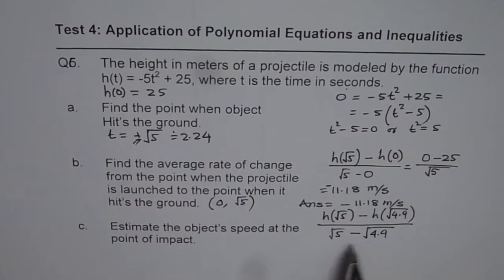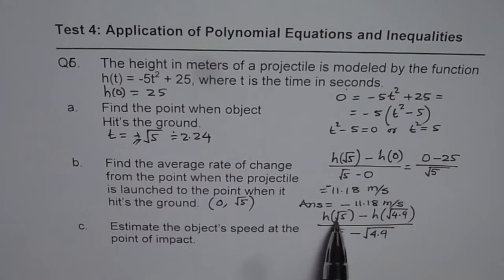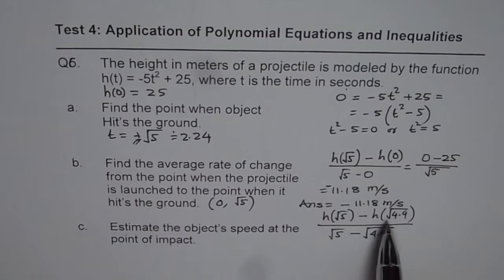Which is just less than h of 5. So this is very close just before impact. We cannot use the following interval, but we can definitely use this interval. So let us use the calculator to find these values. We know h(√5) is 0. So we need to find what is the value when it is h of 4.9.